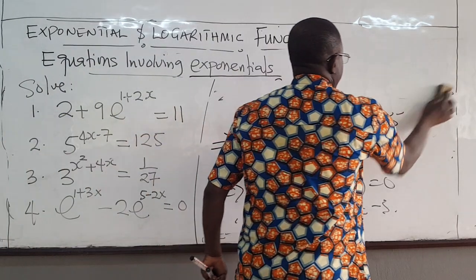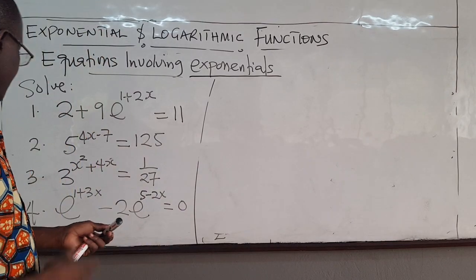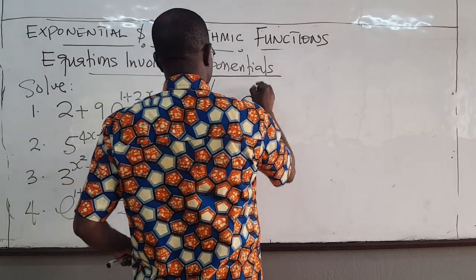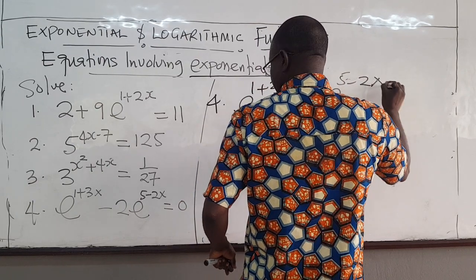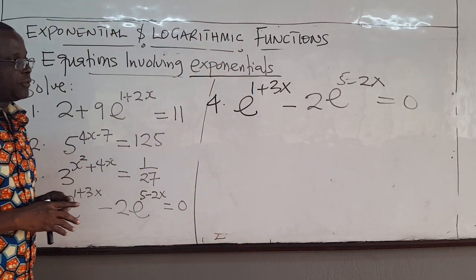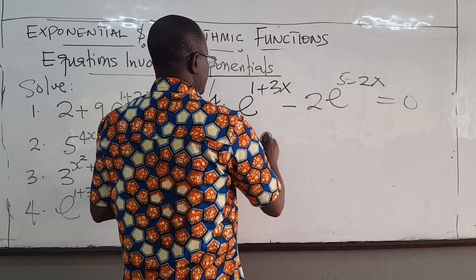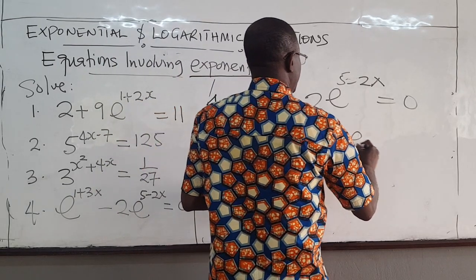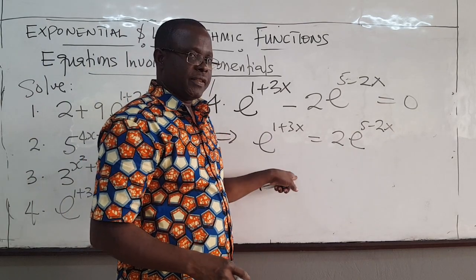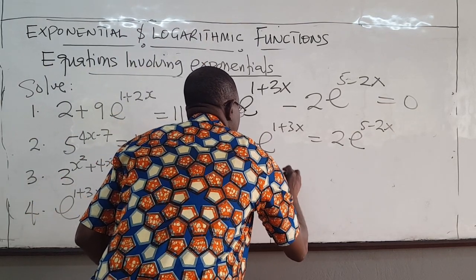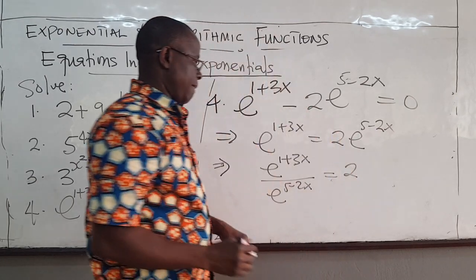Last one in this set. So we have now e^(1+3x) - 2e^(5-2x) = 0. Trying to solve for x, what do we do? Well, we can take this to that side. As such, we have e^(1+3x) = 2e^(5-2x). Now we can bring this down here. So I'm going to write this. This means that e^(1+3x) over e^(5-2x) = 2.